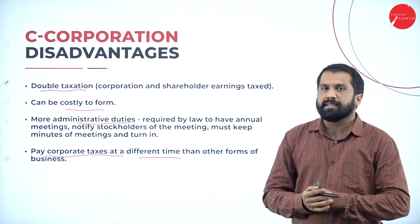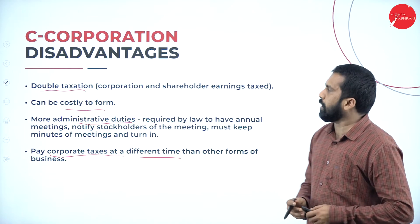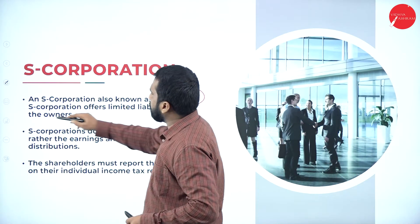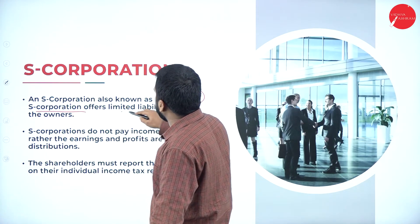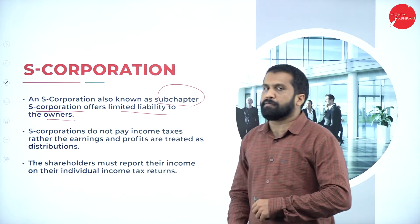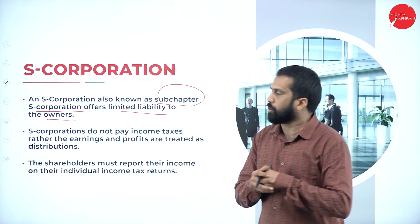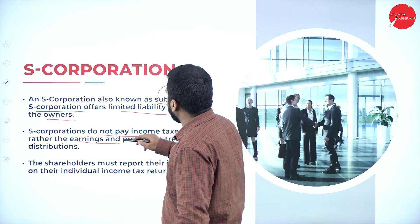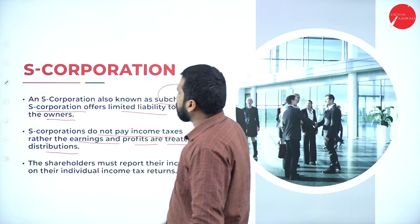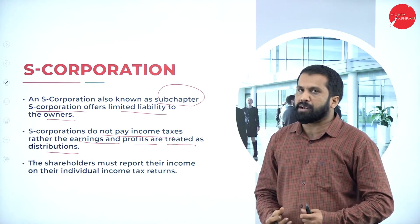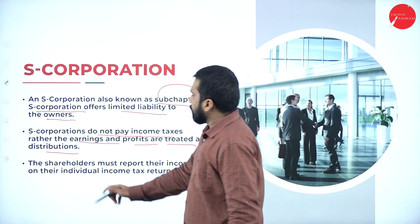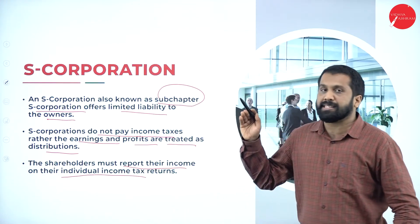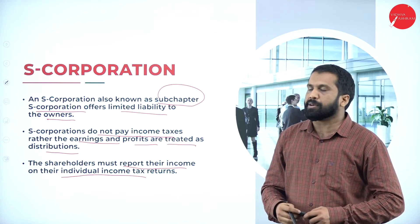S corporation, also known as subchapter S corporation, offers limited liability to the owner. The subchapter of the corporation is called S corporation. S corporation does not pay income taxes — rather, the earnings and profits are treated as distributions. Whatever profit they earn, they distribute, and shareholders must report their income on their individual income tax return.